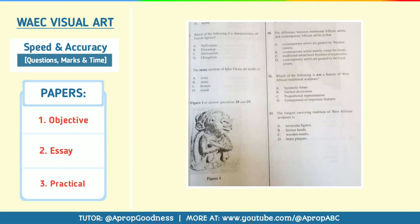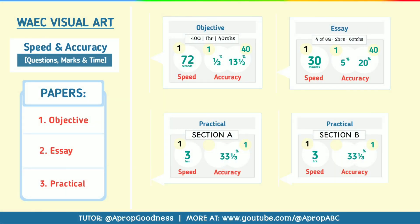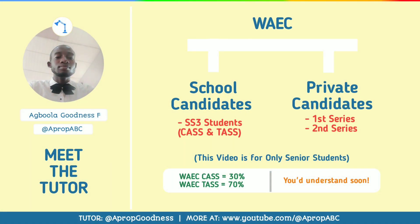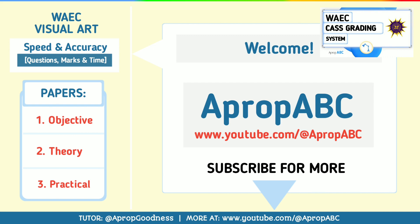Let's continue with our speed and accuracy analysis for Visual Arts, talking about the questions. You have an objective section, you have theory, and you also have the third part which is A for drawing and B for creative design. Before I continue, make sure you know that any time I talk about percentage in this video, you have to multiply it by 70 if you are a school candidate. If you don't understand this, click the card you can see on the screen right now. If you need syllables, check the description section.